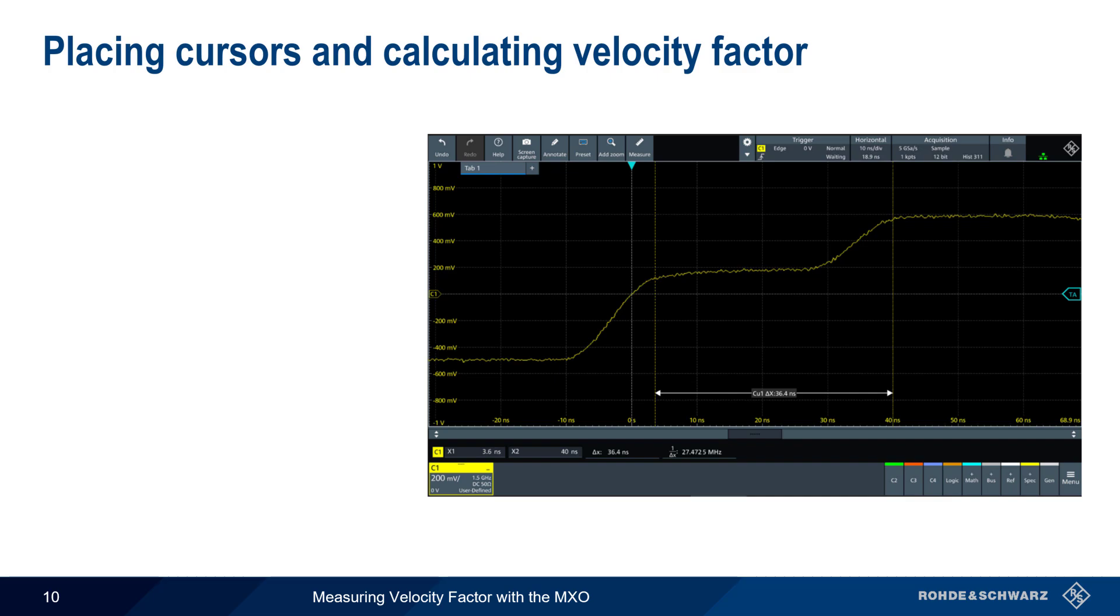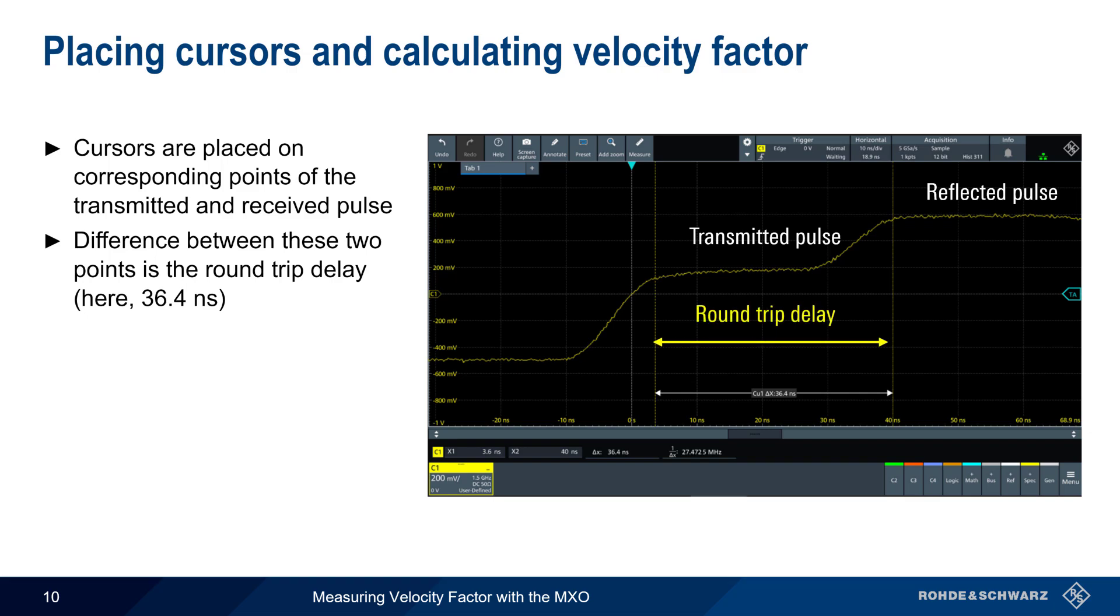The final step is measuring the round trip delay between the transmitted pulse and the reflected pulse. This is done by placing cursors on the corresponding points of each pulse and reading off the round trip delay. We then use half of this value as the one-way delay in our velocity factor formula. In this example our cable was measured to be 3.6 meters long, so the calculated velocity factor is approximately 0.66, which is a common value for many types of coaxial cable.